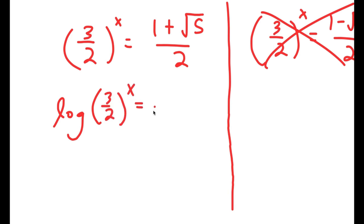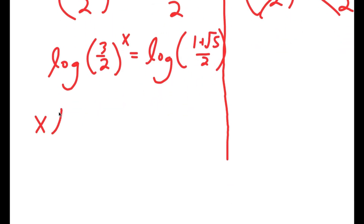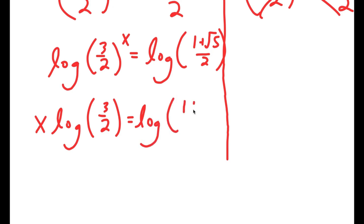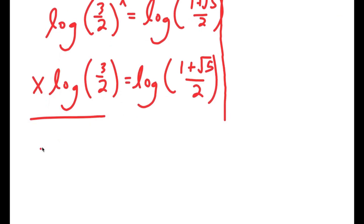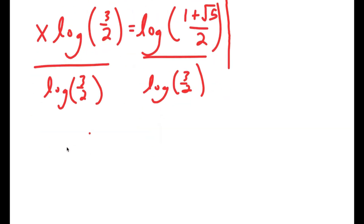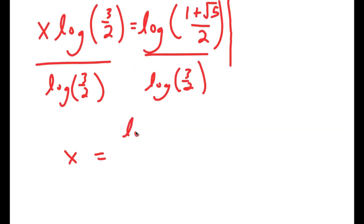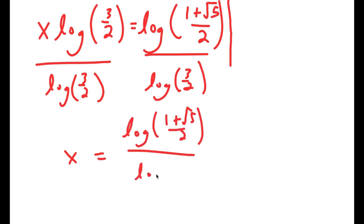Taking the log of both sides: log of (3/2)^x equals log of (1 plus √5)/2. This becomes x times log(3/2) equals log((1 plus √5)/2). Dividing both sides by log(3/2), I get x equals log((1 plus √5)/2) over log(3/2).